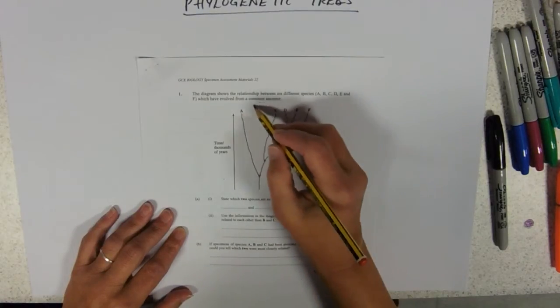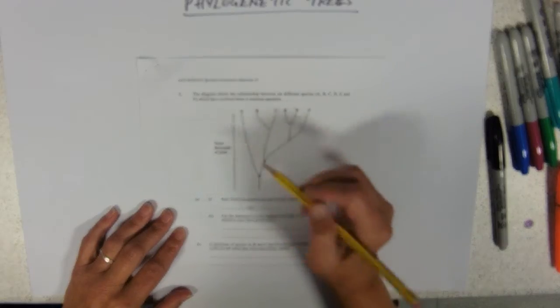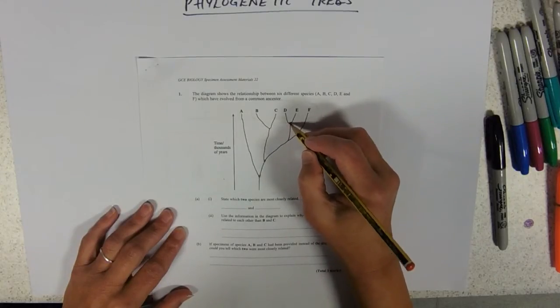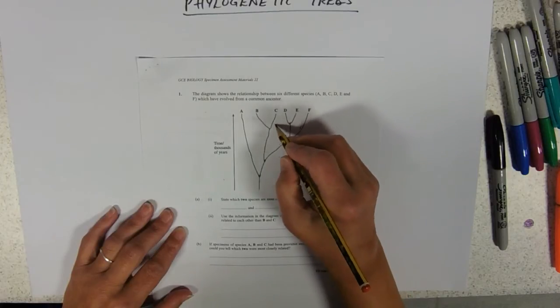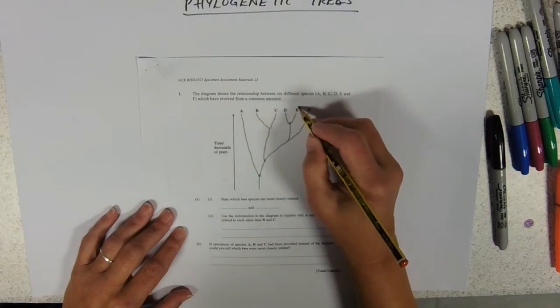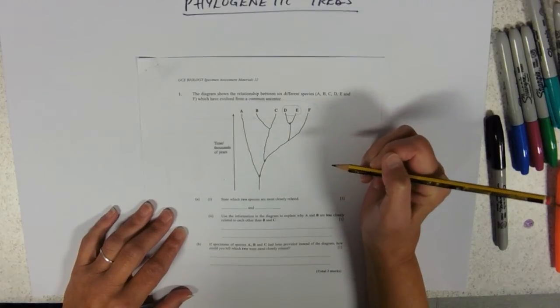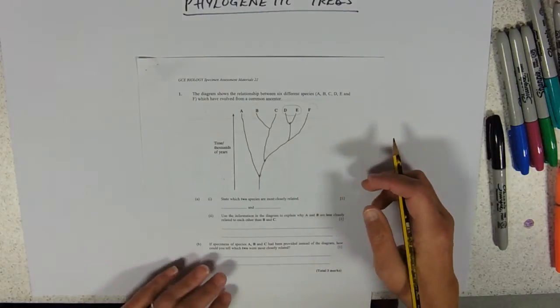The more recent the common ancestor, the more close the relationship. So, these two have a quite recent common ancestor. Those two are the most closely related on that tree. So, I'm hoping that that kind of makes sense.